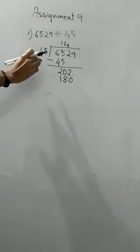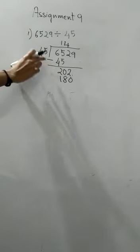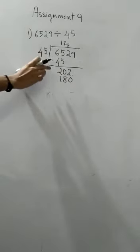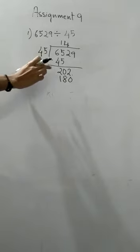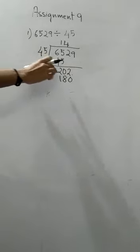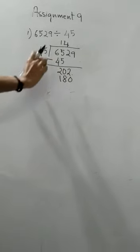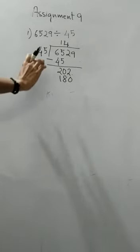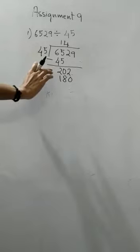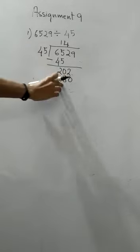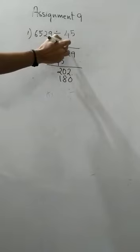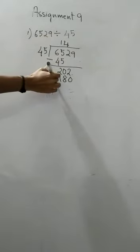What did I do, you understood? 45 into 5, if I do, 40 into 5 is 200, and 5 into 5 is 25, means it will be more than 202. So we will do the next, the below 1, that is 45 into 4. You will get 180. So write the 4 here, 45 into 4 is 180.